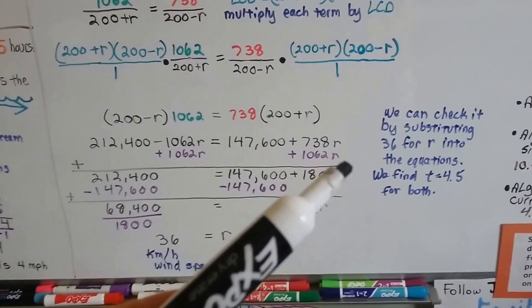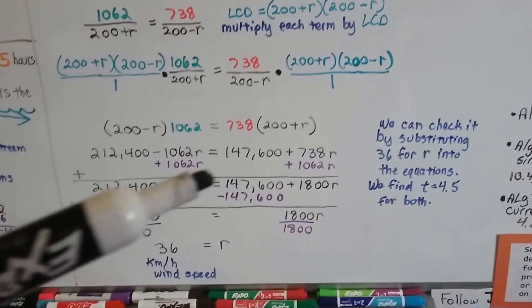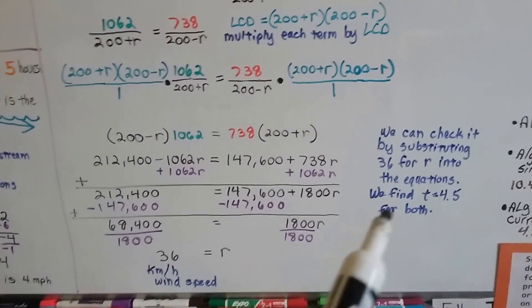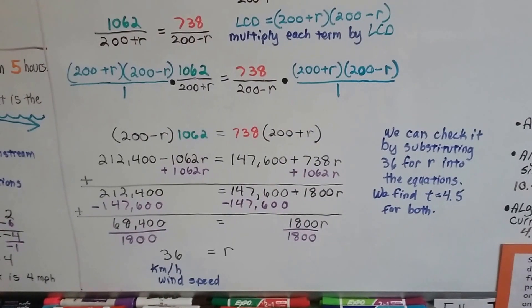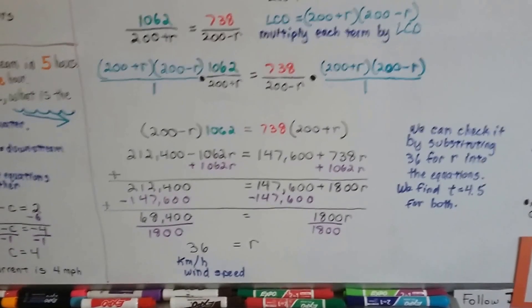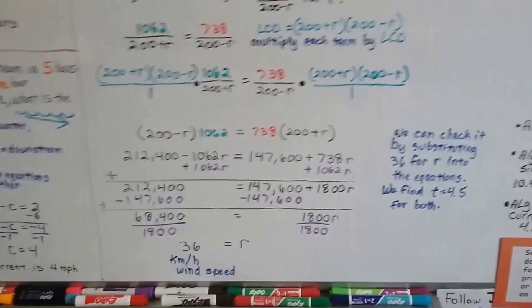What we do is, we can check it by substituting 36 for r into the equations, and we'll find out that the t equals 4.5 for both of them, and it fits. So we solved it. Least common denominator, very important.